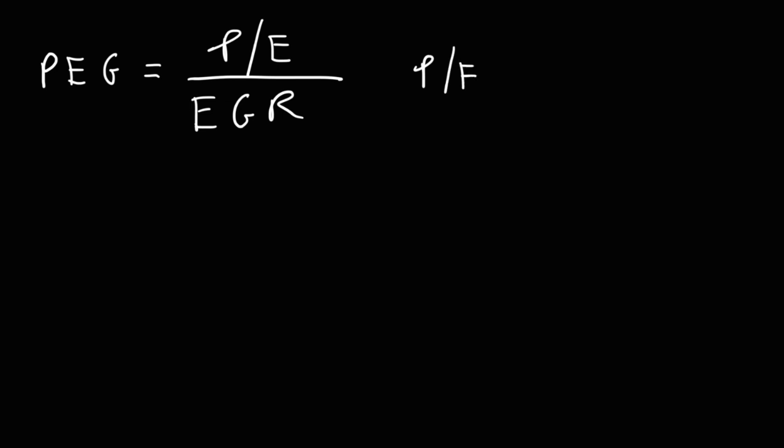The price-to-earnings ratio is equal to the price of the stock divided by the EPS, or the earnings per share.